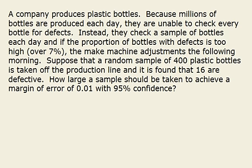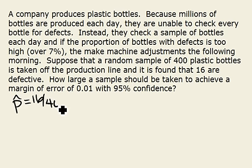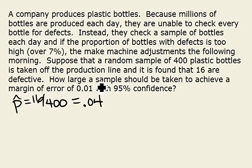If we're trying to estimate our population proportion p based on our sample proportion p-hat — which here is 16 out of 400, or 0.04 — we can use this value as a guess for what our population proportion might be to help us find out how large a sample should be taken to achieve the error that we want.